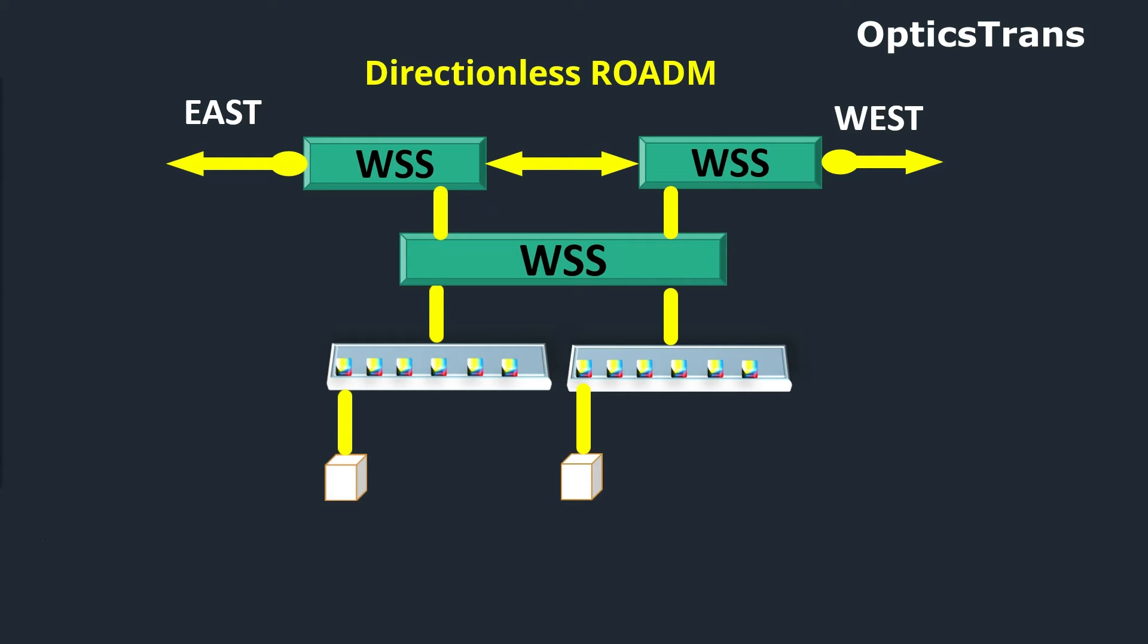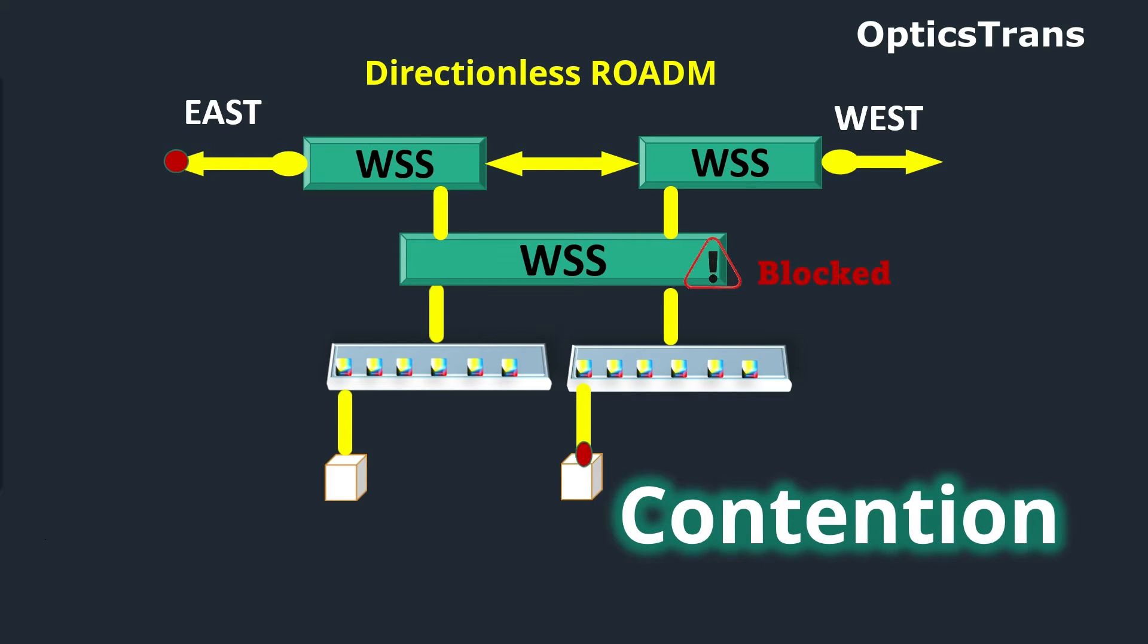For example, if a service provider adds a red wavelength in the east direction, then a red wavelength cannot be added to any other direction from that directionless module. This can lead to wavelength blocking scenarios. This is called contention.